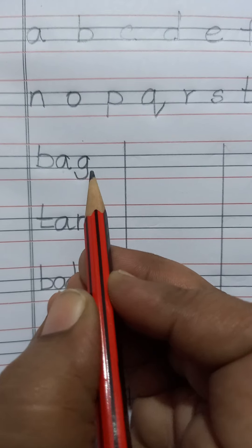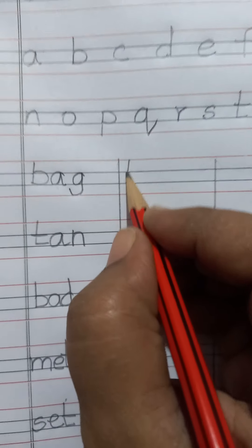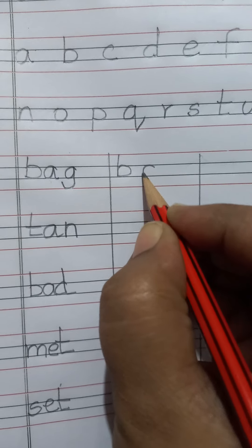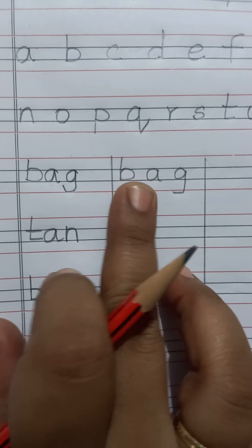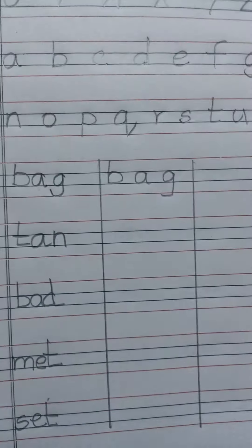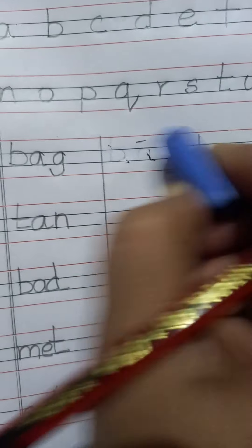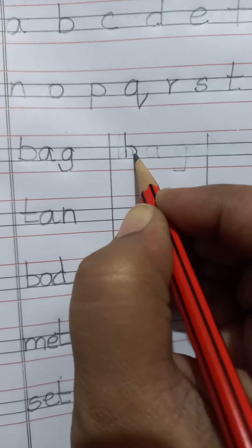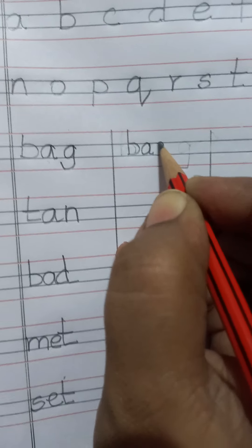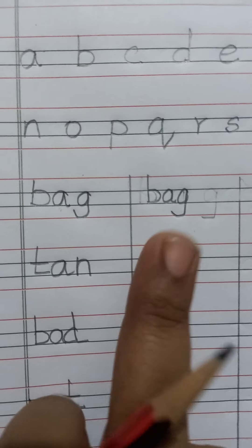See, like this only want to write. You should not leave space between two letters. This is a word, so you should not leave space. You should not write B, A, G. You are writing B, next A, next G. Bag. Like this only you want to write. This is correct manner.